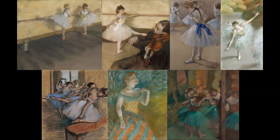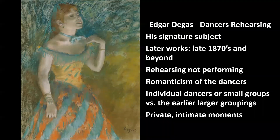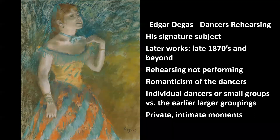Let's look at more dancer paintings — these are works from the late 1870s and beyond. The earlier works we saw were from the early and mid-1870s. Dancers is Degas's signature subject. Again, the dancers are rehearsing, not performing.